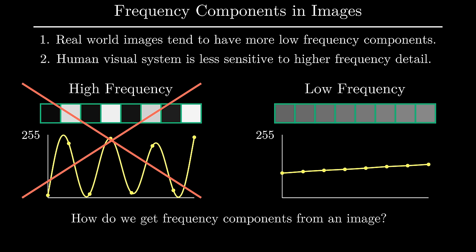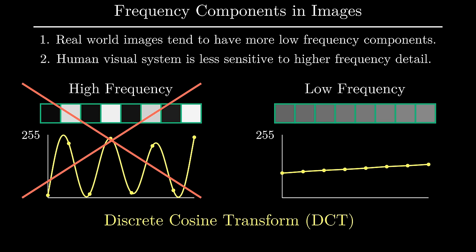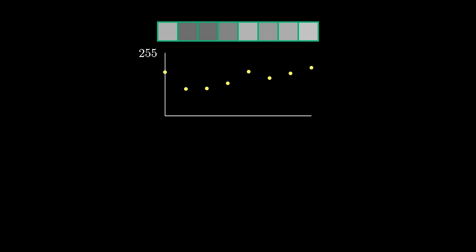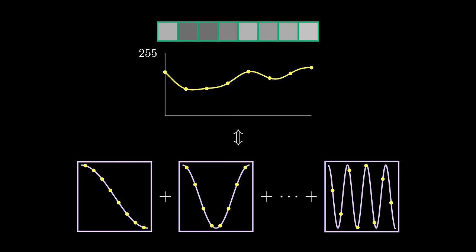There are two key aspects of frequencies within images important to JPEG compression. First, a lot of real world images are mostly composed of lower frequency components — pixels in a random portion of a realistic image typically don't change that rapidly. Second, the human visual system is generally less sensitive to higher frequency detail in images. JPEG takes advantage of these ideas by strategically removing less important and less common higher frequency components. But there's one big problem: how do we get frequency components from an image?